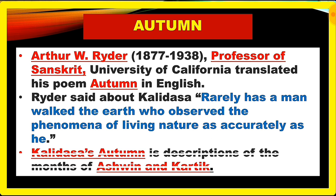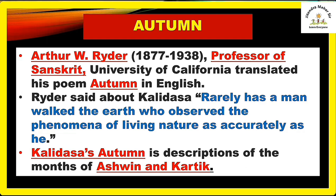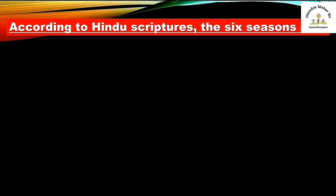Kalidasa's Autumn is a description of the months of Ashwin and Karthik. This is the Indian autumn poem, which is a description of Indian autumn, so you need to understand the season of Indian autumn according to Hindu scripture.